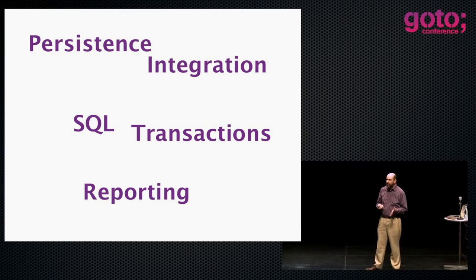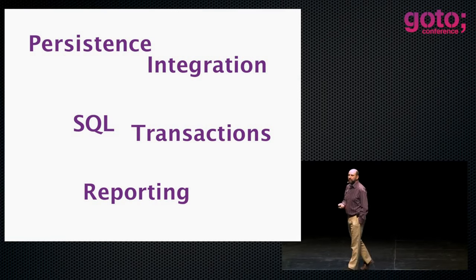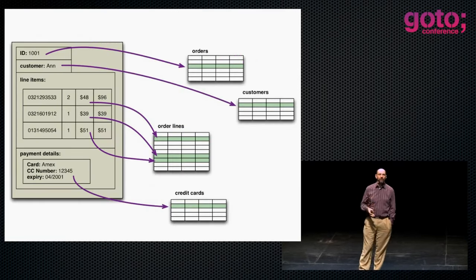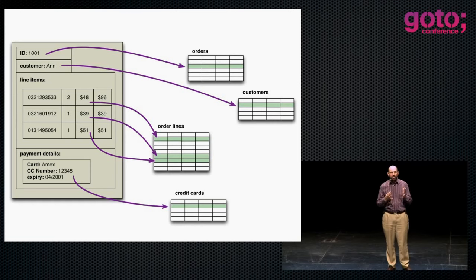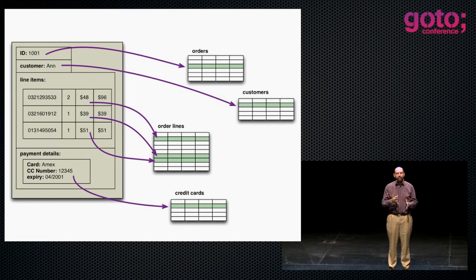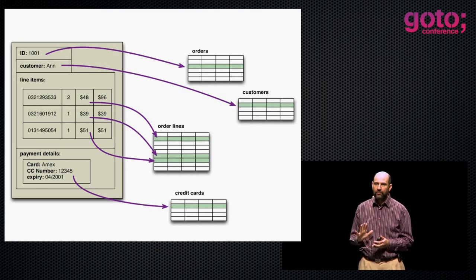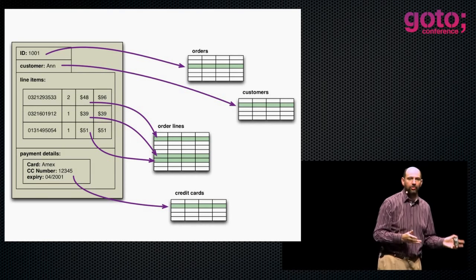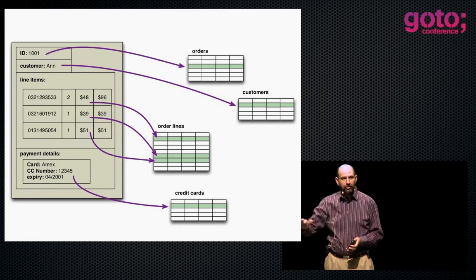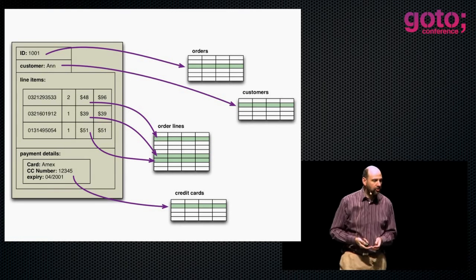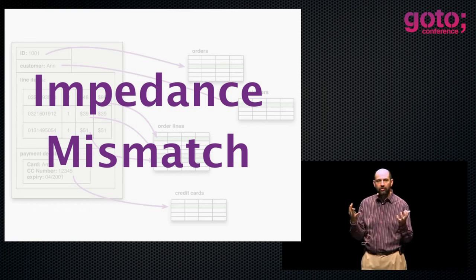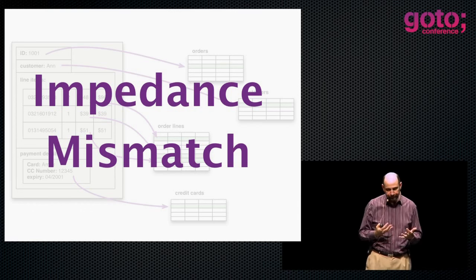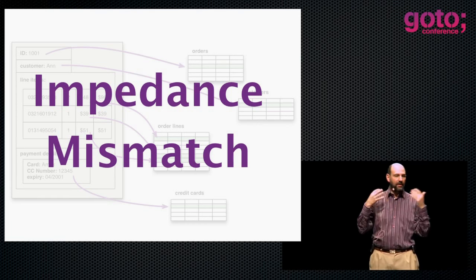SQL databases are a really good thing, but they also have some problems. The most obvious problem is one that most application developers run into: we assemble structures of objects in memory, often as a cohesive whole, and then to save it to the database, we have to strip it into bits so it goes into individual rows and tables. A single logical structure ends up splattered across lots and lots of tables. This is referred to as the impedance mismatch problem — we have two very different models of how to look at things, and matching them causes difficulties. This is what leads to object-relational mapping frameworks.